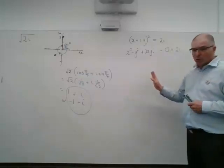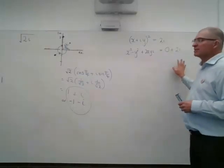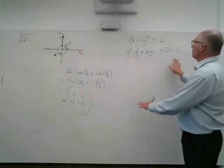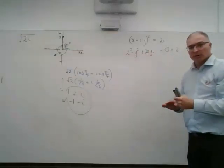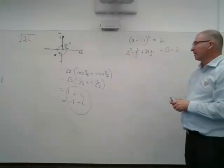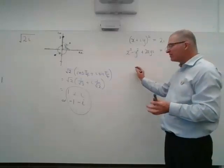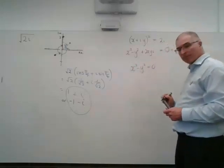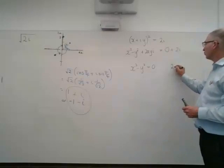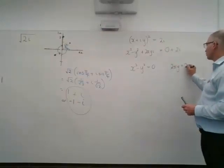So we know the rule that says if two complex numbers are equal, then their real parts are equal and their imaginary parts are equal. So we can equate the real parts and equate the imaginary parts, and we get a pair of simultaneous equations. We have x squared minus y squared equaling 0, and we have 2xy equaling 2.